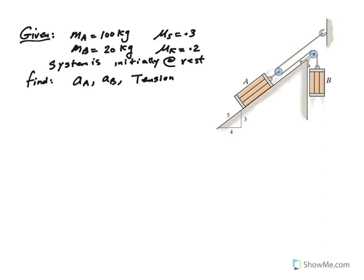Hello everybody, I'm here with an example of kinetics of particles involving a pulley system consisting of two masses here, mass A which is given to be 100 kg and mass B which is 20 kg.